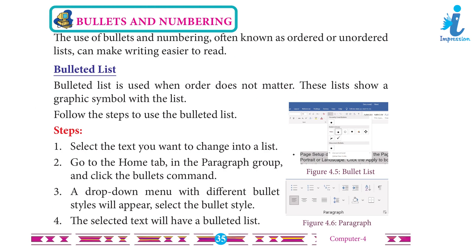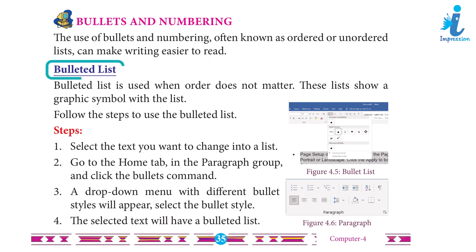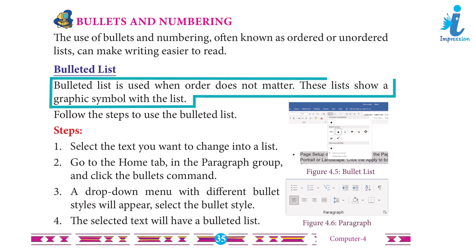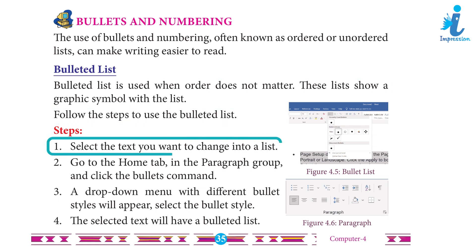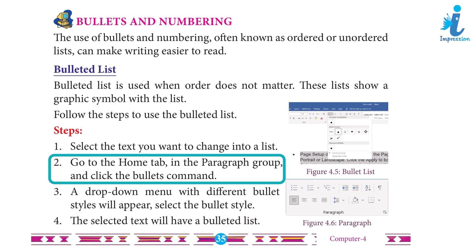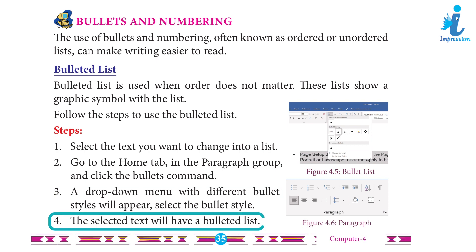Bullets and Numbering: The use of bullets and numbering, often known as ordered or unordered lists, can make writing easier to read. Bulleted List: A bulleted list is used when order does not matter. This list shows a graphic symbol with the list. Follow the steps to use the bulleted list. Step 1: Select the text you want to change into a list. Step 2: Go to the Home tab in the Paragraph group and click the Bullet command. Step 3: A drop-down menu with different bullet styles will appear. Select the bullet style. Step 4: The selected text will have a bulleted list.